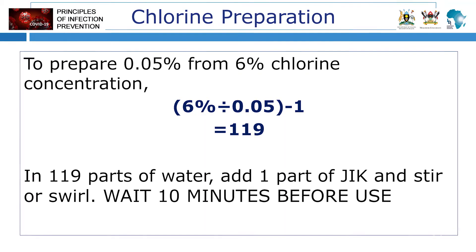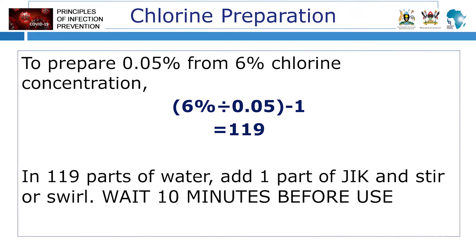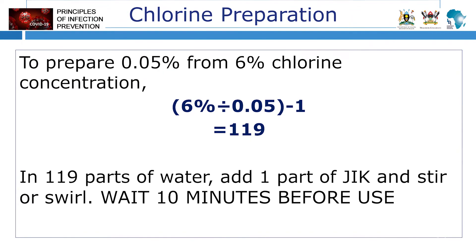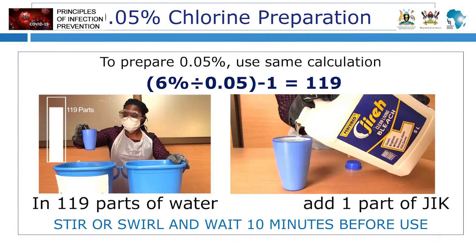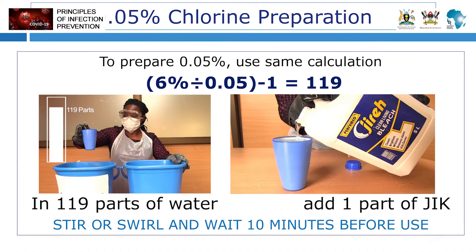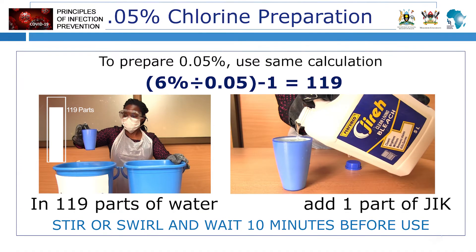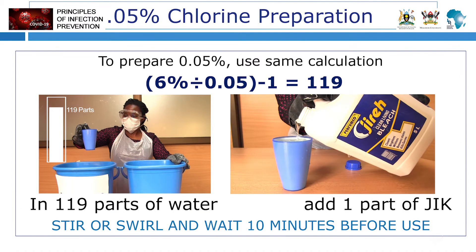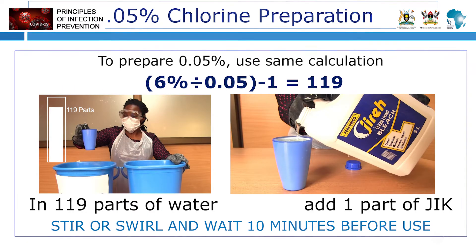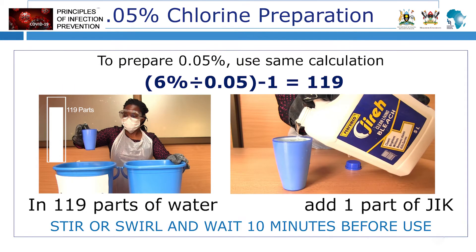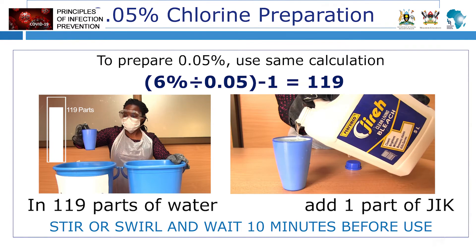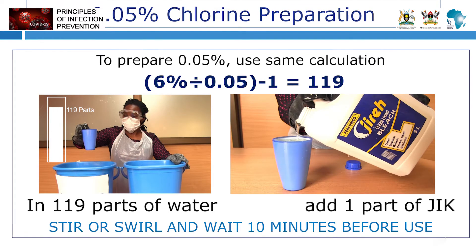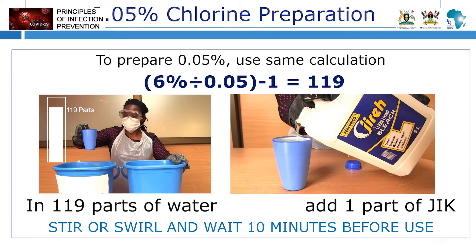To prepare 0.05% from 6% chlorine solution, we use the same calculation and divide 6% by 0.05. Our answer will be 119, implying that in 119 parts of water we add one part of jik. Be sure to use the same size of instruments, cups, jugs, or measuring cylinder.